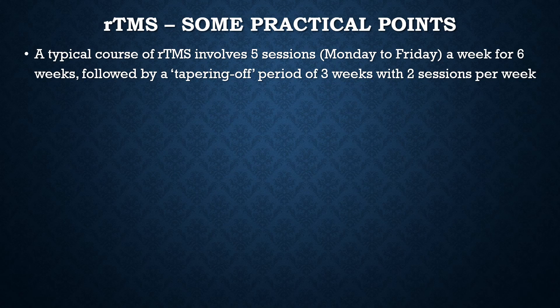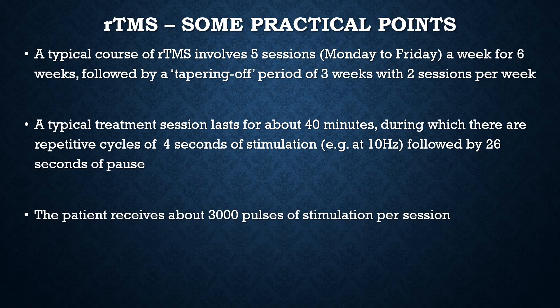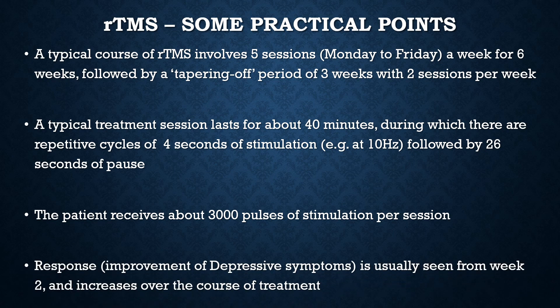A typical course of rTMS involves 5 sessions a week for 6 weeks, followed by a tapering period with 2 sessions per week for 3 weeks. A typical treatment session lasts about 40 minutes, with repetitive cycles of 4 seconds of stimulation followed by 26 seconds of pause, delivering about 3000 pulses per session. The response in depression is usually seen from week 2 and increases over the course of treatment.